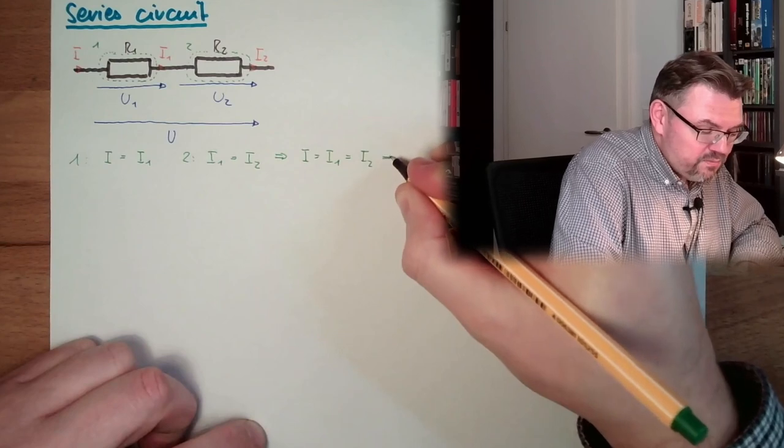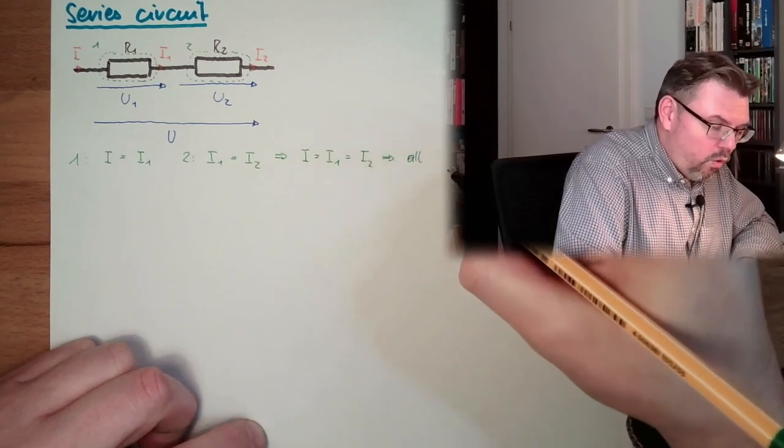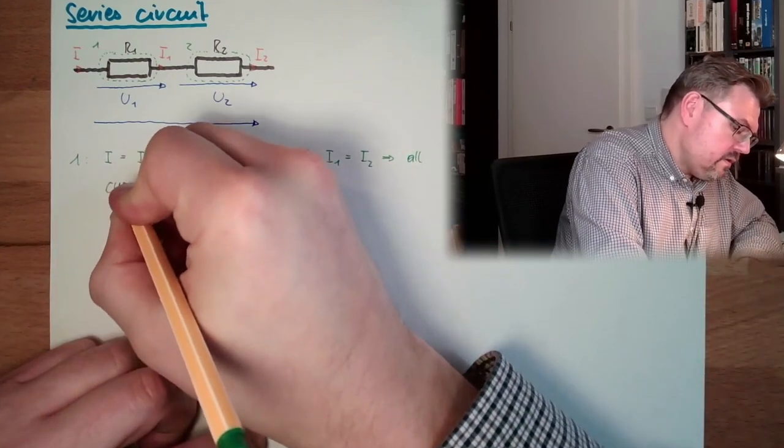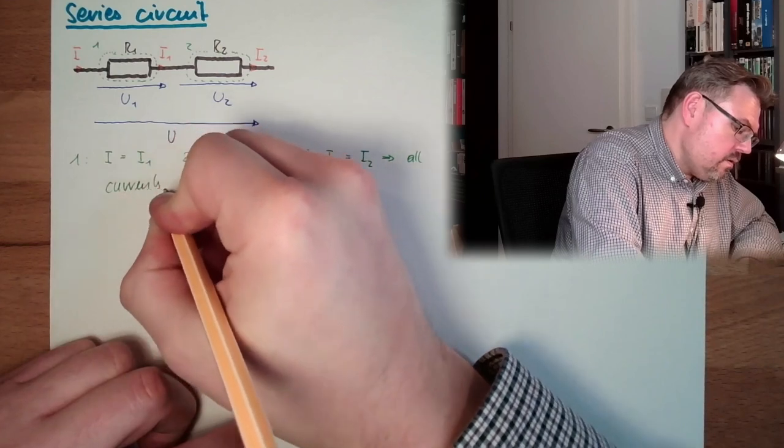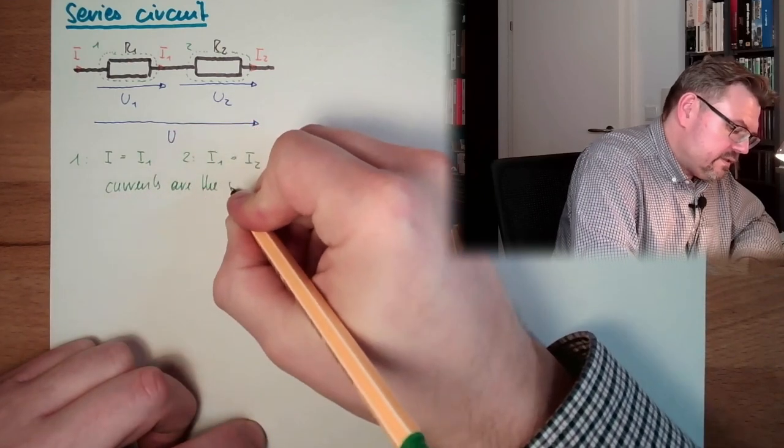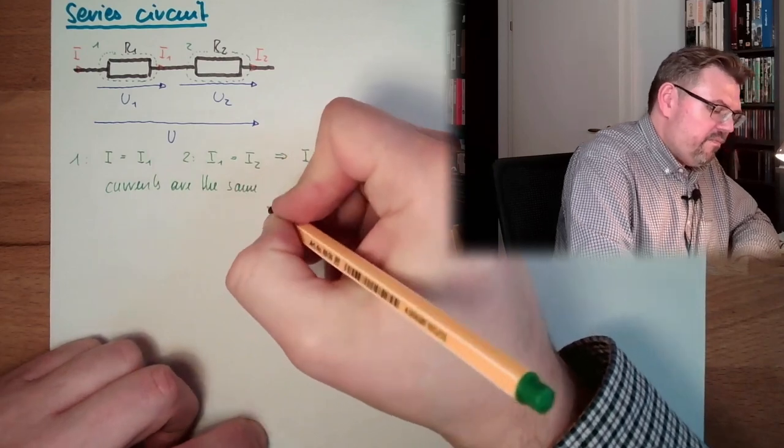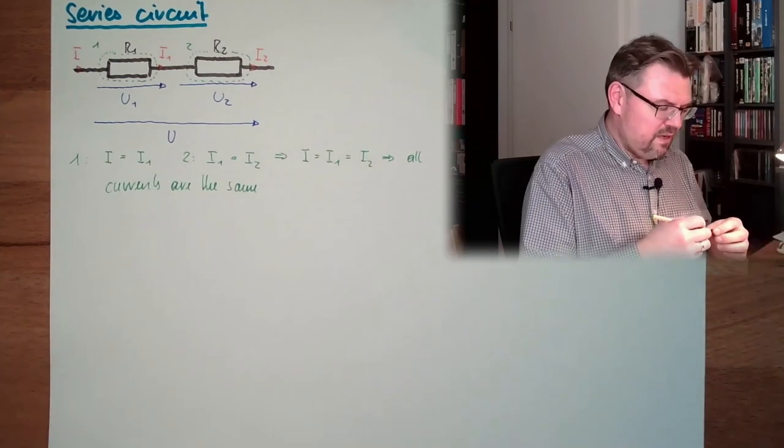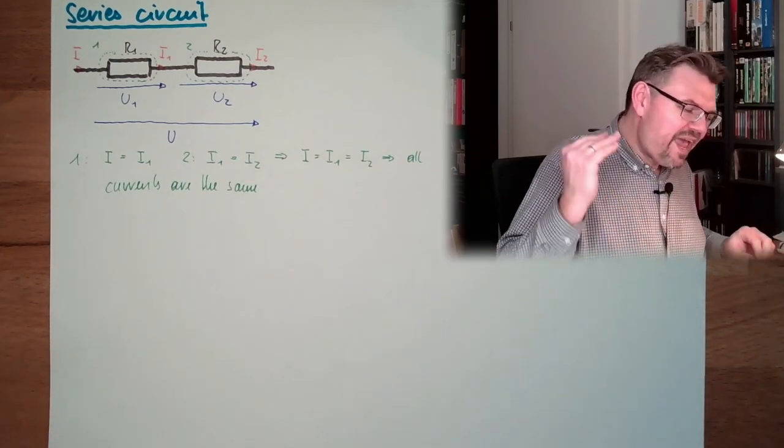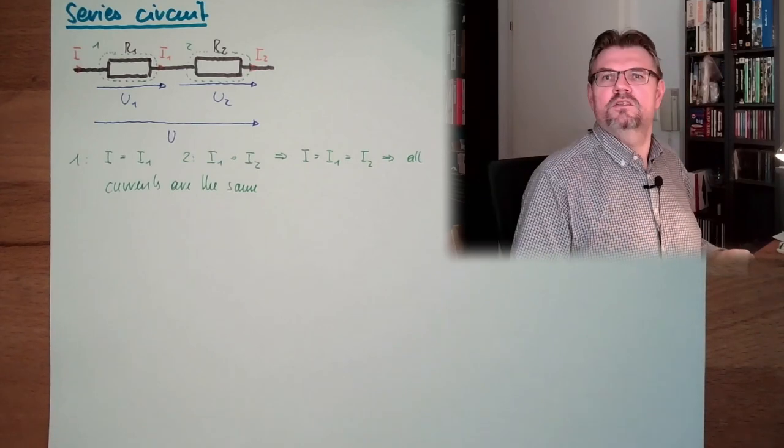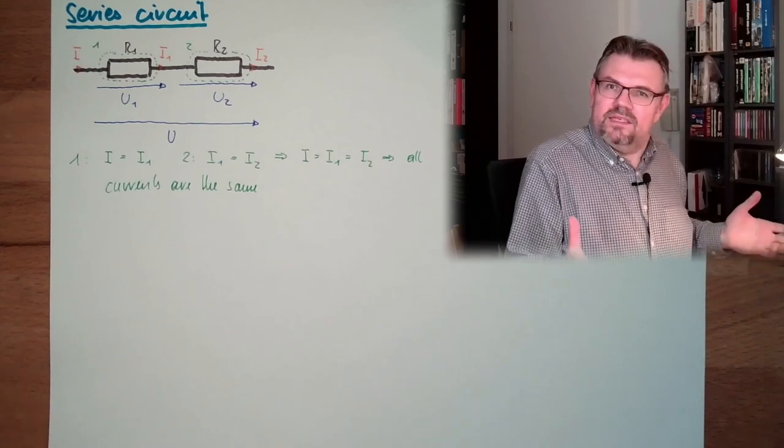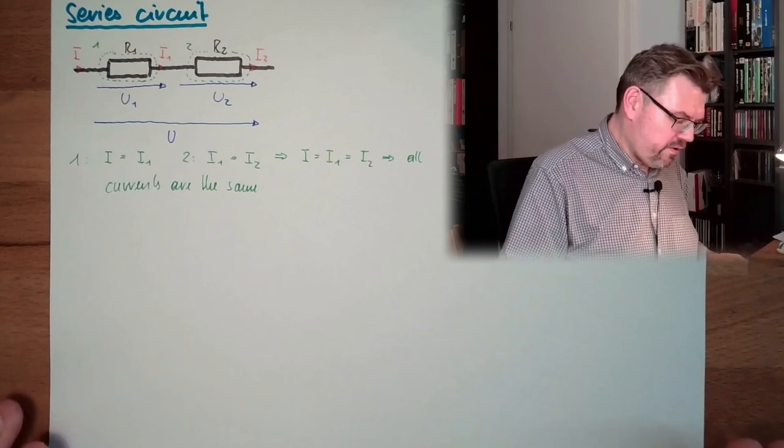This means all currents are the same. There is only one current, and this current has to pass every element in the series connection. That's it, only one current.